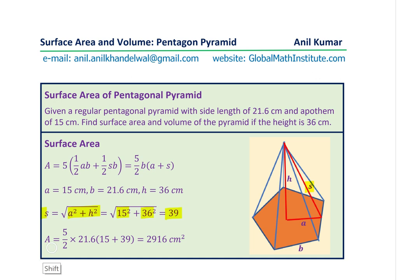So surface area A is five over two times 21.6, which is the base. A is 15 plus 39, which is calculated as slant height. And using the calculator, you get the value 2916 centimeters square as the surface area for the pentagonal pyramid.